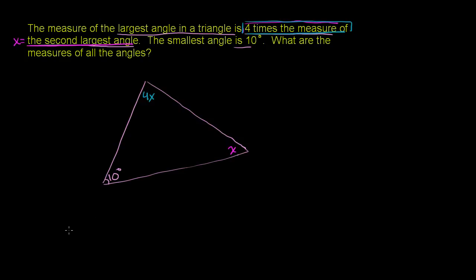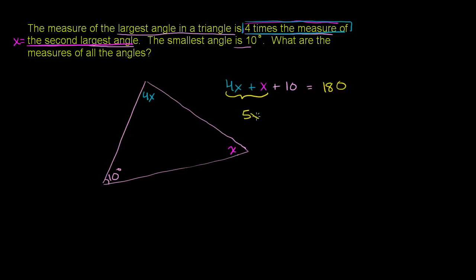The one thing we know about the measures of the angles inside of a triangle is that they add up to 180 degrees. So we know that 4x plus x plus 10 degrees is going to be equal to 180 degrees. And 4x plus x gives us 5x, so we have 5x plus 10 is equal to 180 degrees.